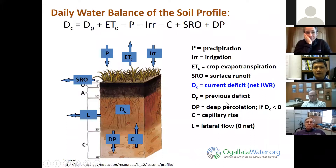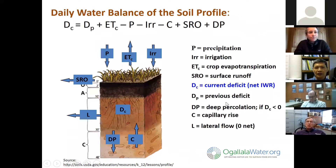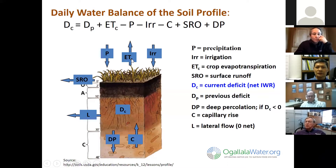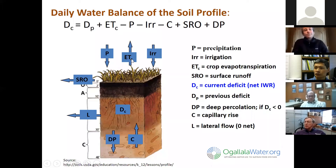The current deficit can be calculated from the previous deficit — for example, on a daily basis, the previous day's deficit — then you add the crop evapotranspiration (ET), which is the water extracted by the crop, and subtract precipitation, irrigation, and possibly capillary rise if a shallow water table is contributing to the root zone. These inputs have negative values because they add water to the profile and reduce the deficit.